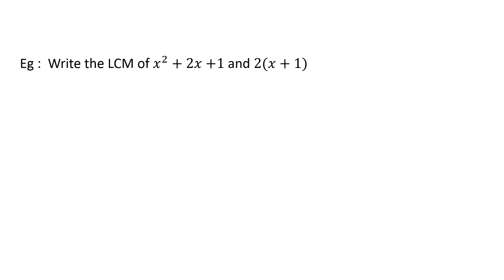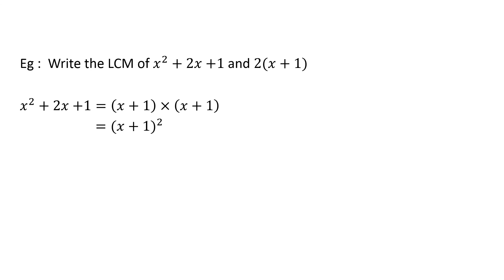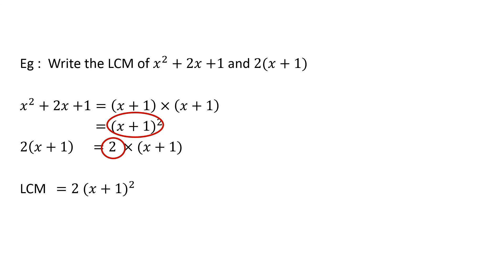The final example: find the LCM of x squared plus 2x plus 1 and 2 times (x plus 1). First, x squared plus 2x plus 1 must be factorized. This is a quadratic expression, and when solved the factors are (x plus 1) into (x plus 1), which can be written as (x plus 1) whole thing squared. Then 2 times (x plus 1) splits into factors as 2 into (x plus 1). Spotting the highest powers: the highest power of 2 is 2, and the highest power of (x plus 1) is (x plus 1) squared. Therefore the LCM is 2 times (x plus 1) to the power 2.